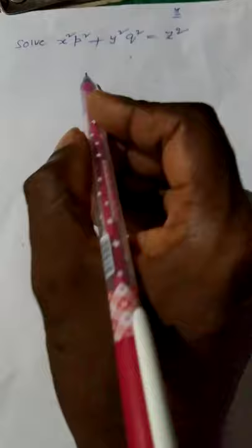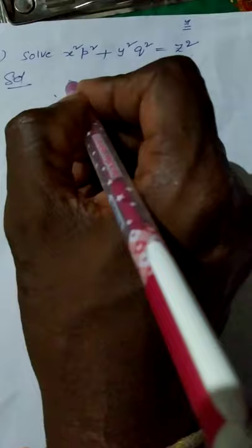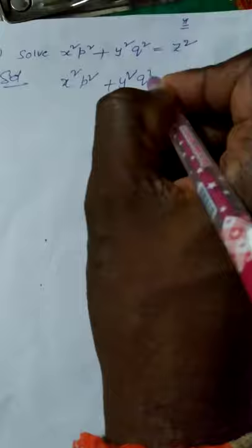In this video, we will discuss the reduction of the given PDE into standard form 1. Consider the problem: solve x² p² + y² q² = z².